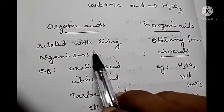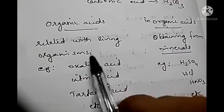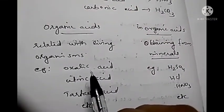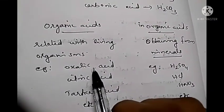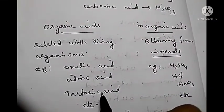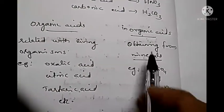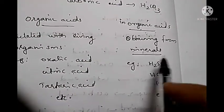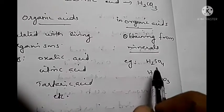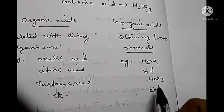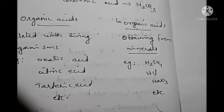Organic acids are observed in living organisms. Examples for organic acids are oxalic acid, citric acid, tartaric acid, etc. Inorganic acids are obtained from minerals. Examples for inorganic acids are H₂SO₄, HCl, HNO₃, etc.